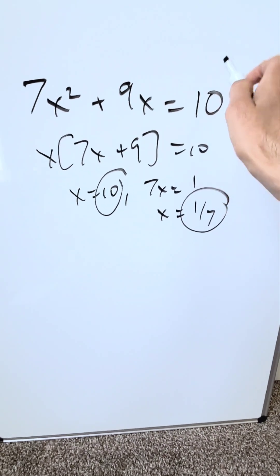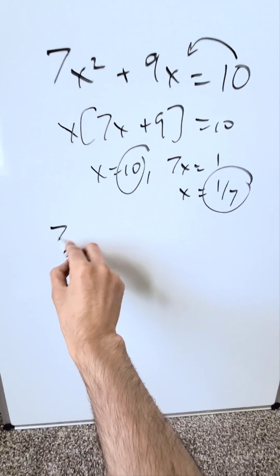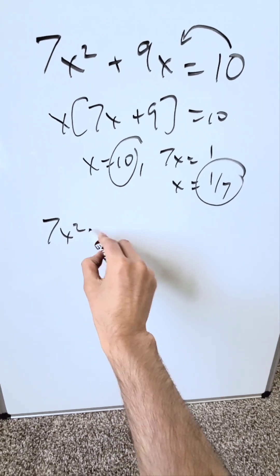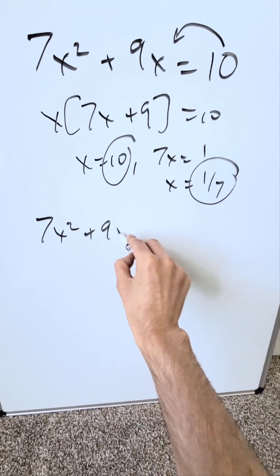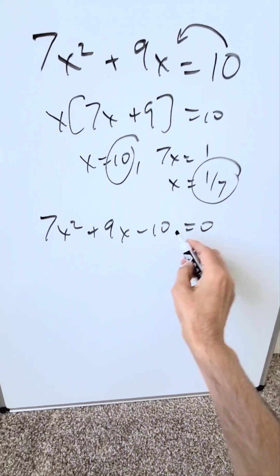How do you solve this correctly? Obviously, you bring the 10 over to the other side, giving you 7x squared plus 9x minus 10 equals 0.